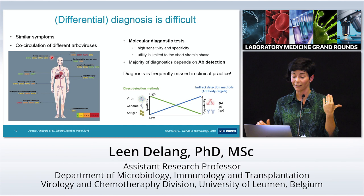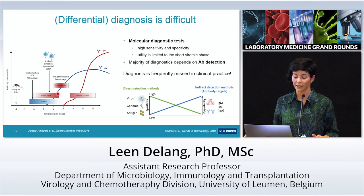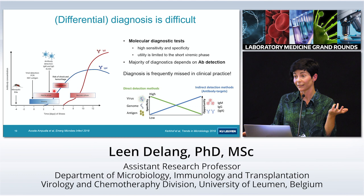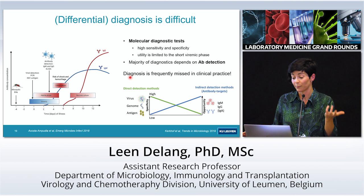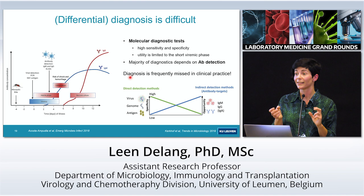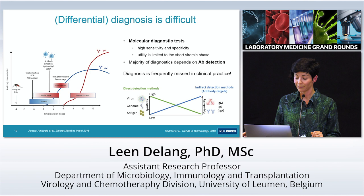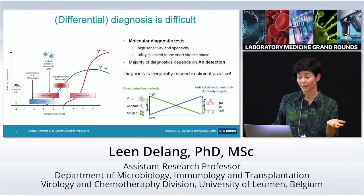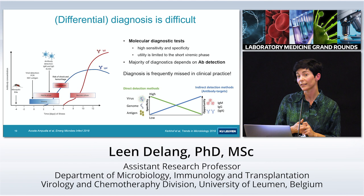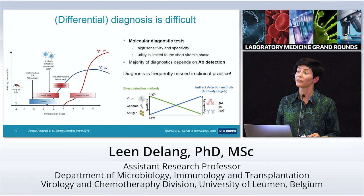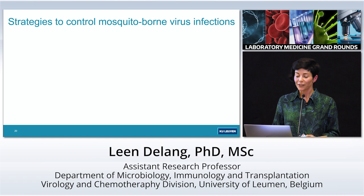In a region where several arboviruses are circulating, it's not possible to diagnose based on symptoms alone. There are molecular diagnostic tests that have high sensitivity and specificity, but because of the short viremia, they can only be used in a very short window. Most diagnostics depend on antibody detection, but many arboviruses share similar antigens, causing a lot of cross-reactivity, making them less specific. The diagnosis of a mosquito-borne virus infection is usually missed in clinical practice — in Africa, most arbovirus infections are not recognized at all and are misdiagnosed as malaria.